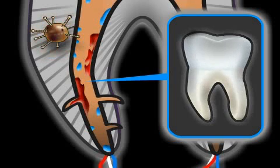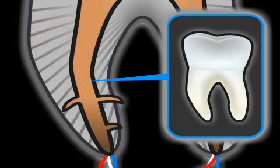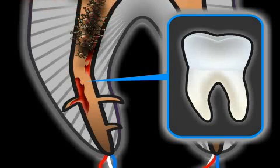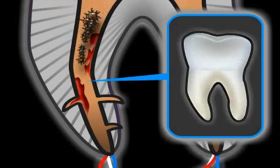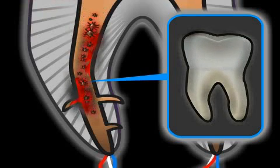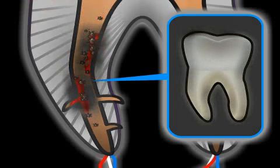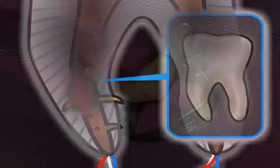Dark discolorations of the tooth after a root canal treatment are indicative of blood and careless work during the treatment. Normally, the canal should be clean and free of blood and bacteria. If this is not the case, bacteria will break down the blood, and the iron present in the blood pigment hemoglobin will darken the tooth area.